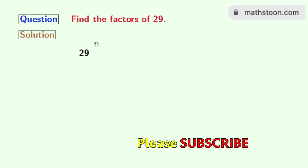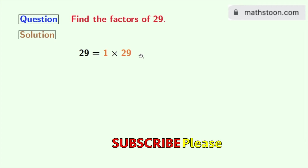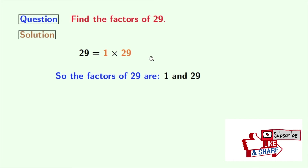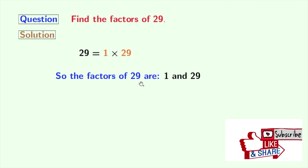To find the factors of 29, firstly we will express 29 multiplicatively in all the possible ways. 29 can be expressed as 1 times 29, and this is the only way we can express 29 multiplicatively. So the factors of 29 are 1 and 29, and the total number of factors of 29 is 2.